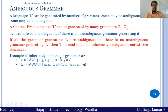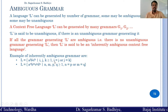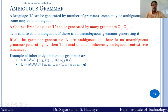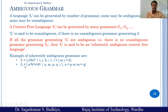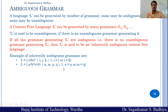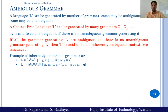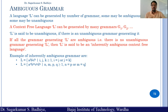An example of an inherently ambiguous language is L = {aⁱbʲcᵏ | i, j, k ≥ 1, i = j or j = k}. Another example is L = {aⁿbᵐcᵖdq | n, m, p, q ≥ 1, n = m or p = q}. These are examples of inherently ambiguous context-free languages. In the next class, we will learn about removal of ambiguity in context-free grammar.